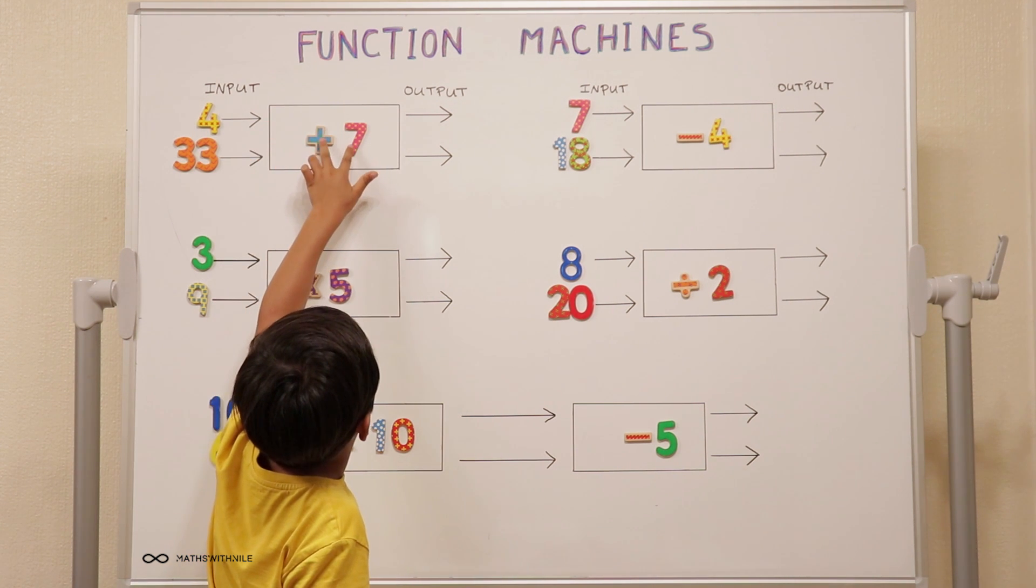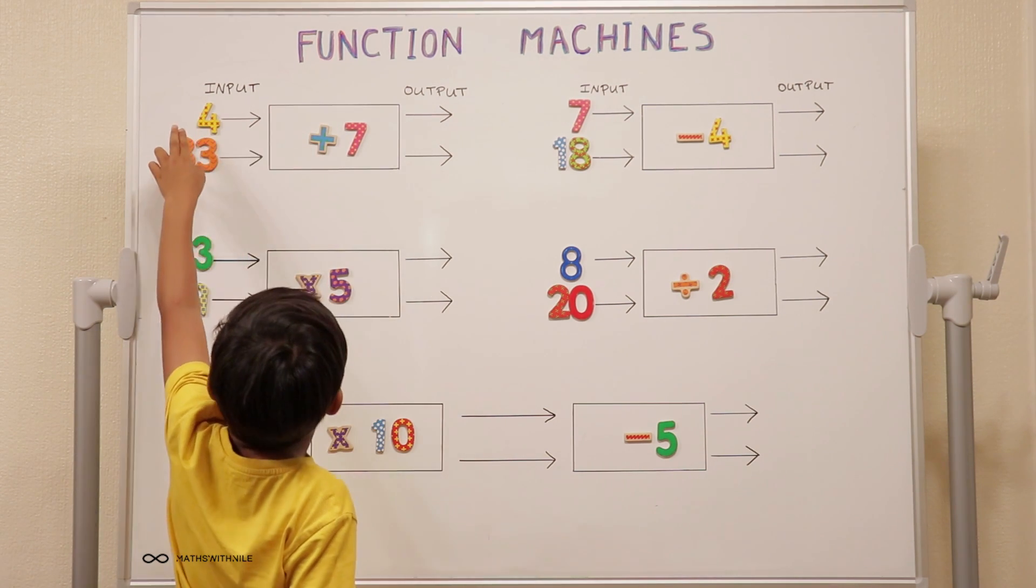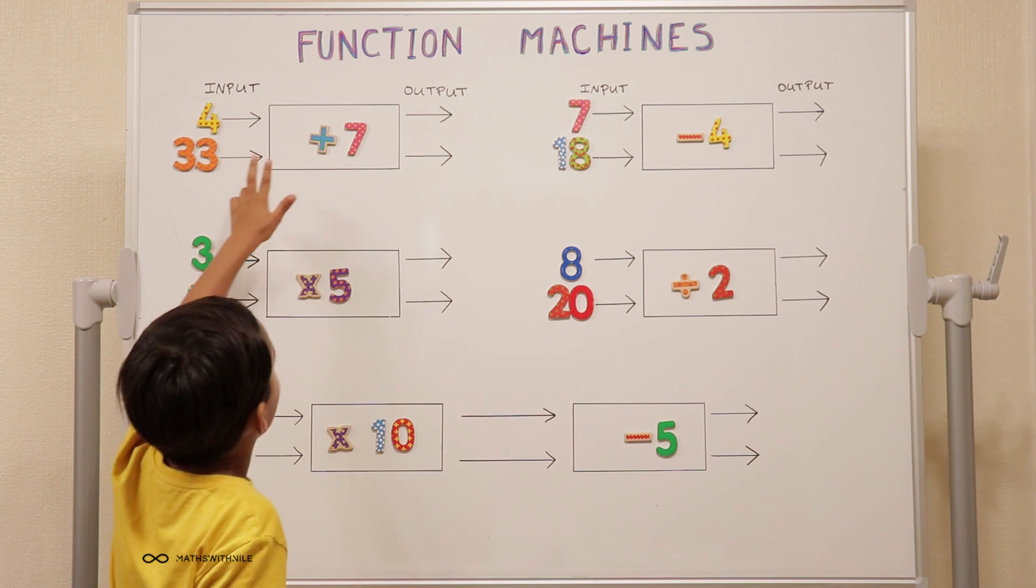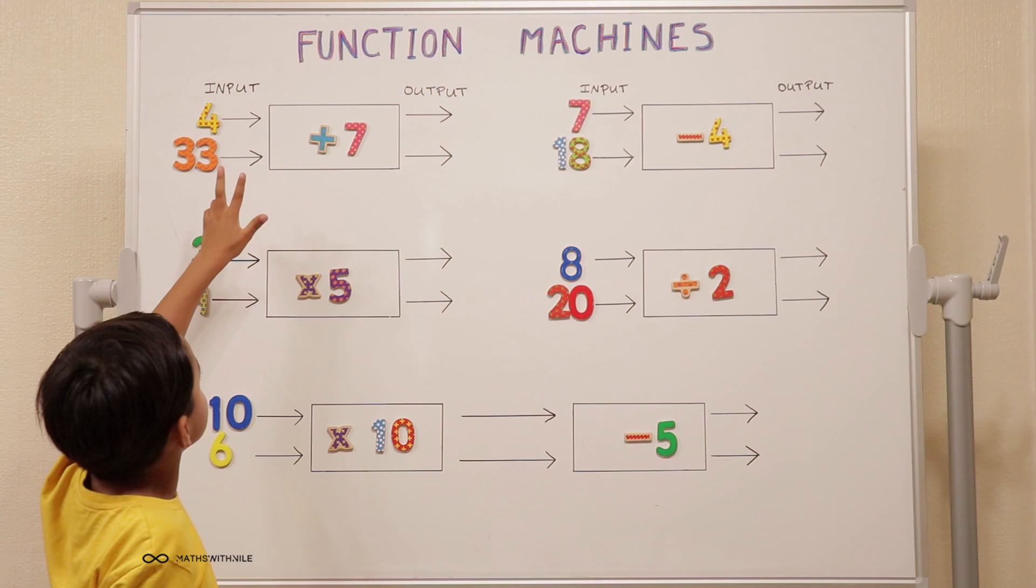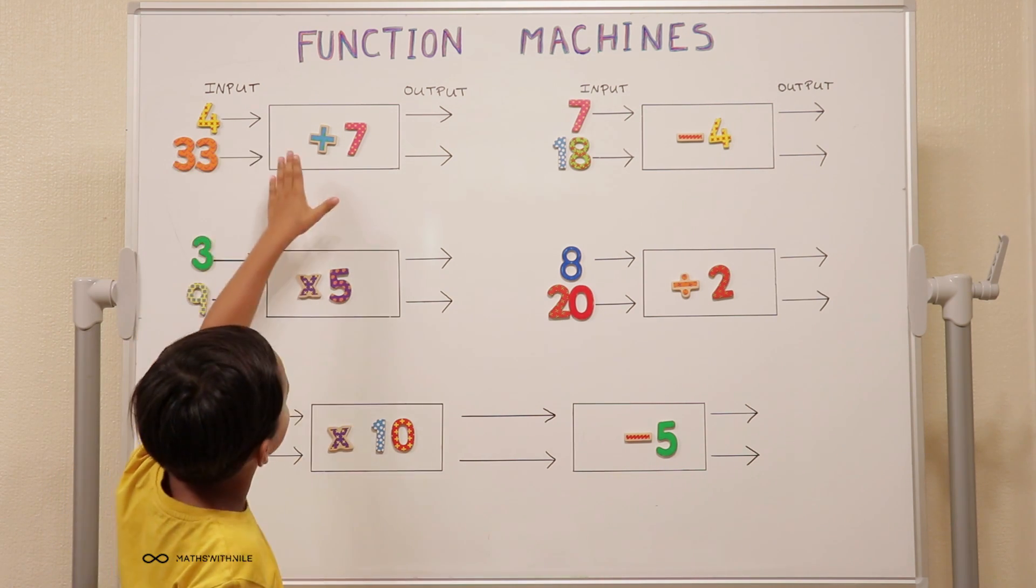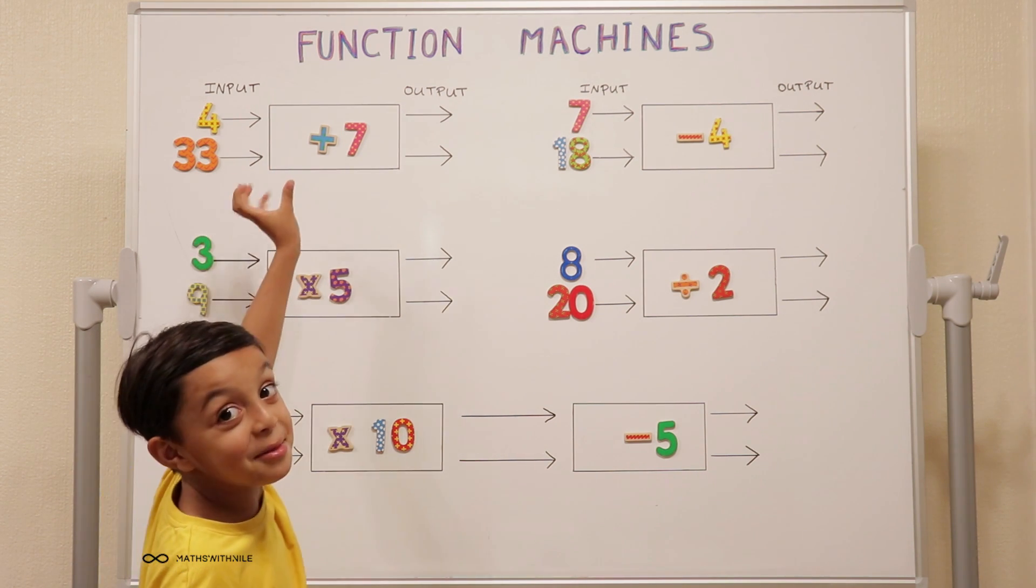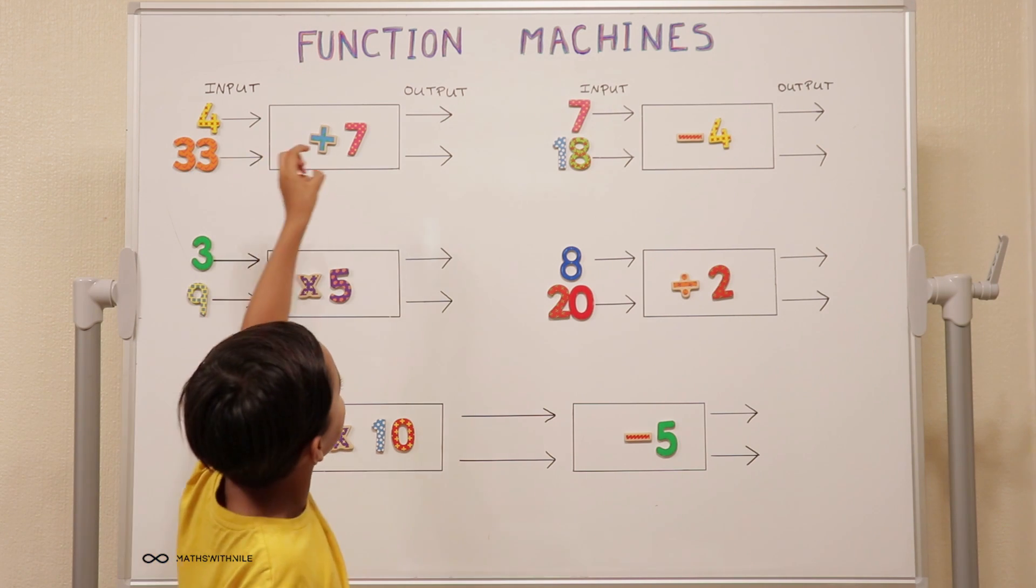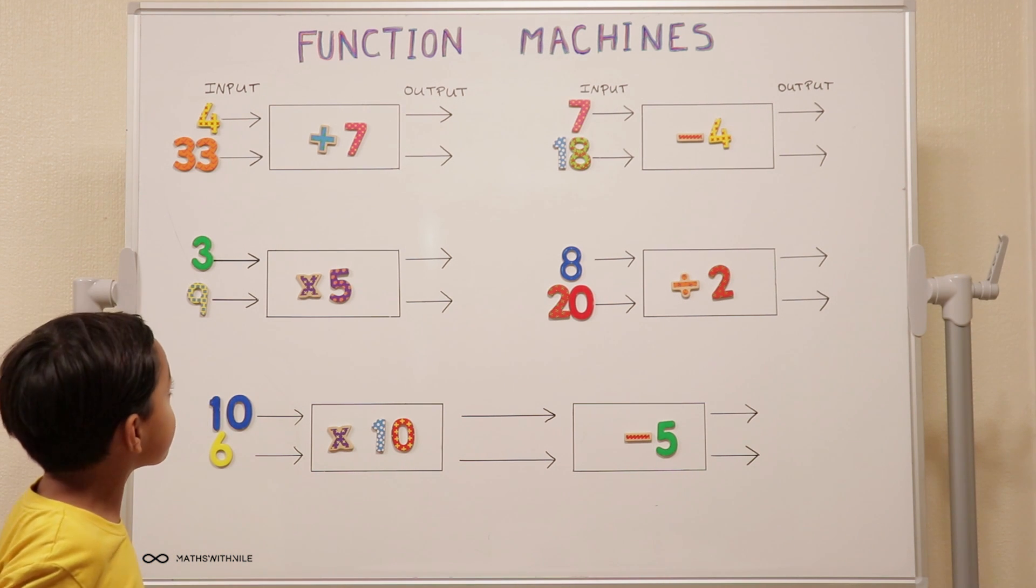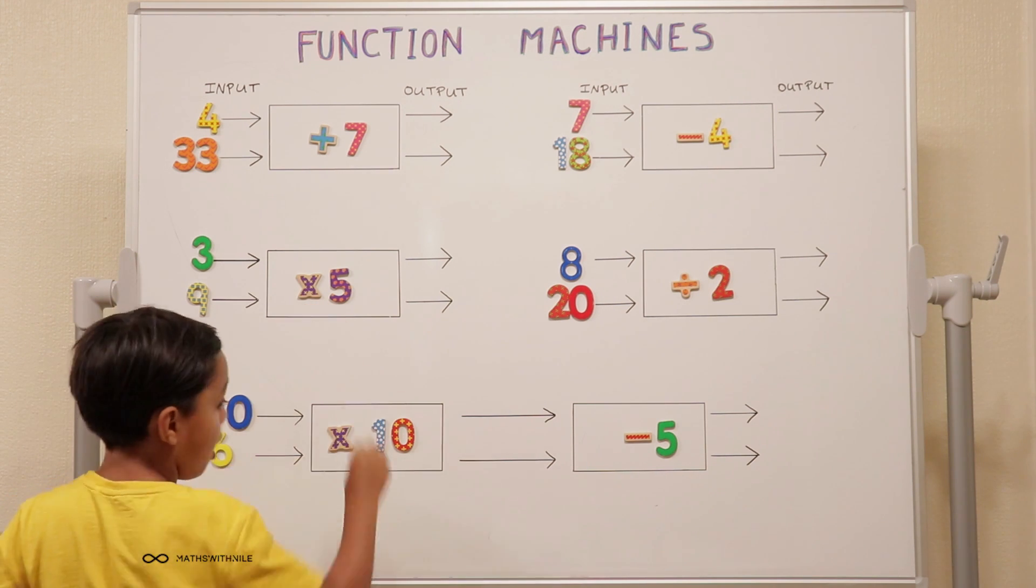The rules are inside the machine. So the rule for this one is plus seven. So it's four plus seven and thirty-three plus seven. And what's the four and the thirty-three called? The input, and then it's going to go into the cooking machine. It's going to cook up the numbers, add them together, and then it's going to come out and the answer's going to be there. And when it comes out, what's that called? The output.